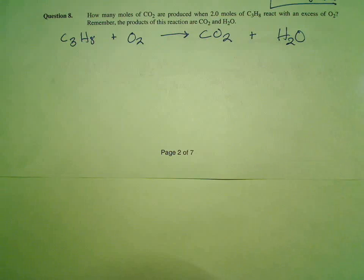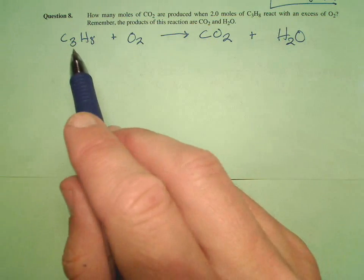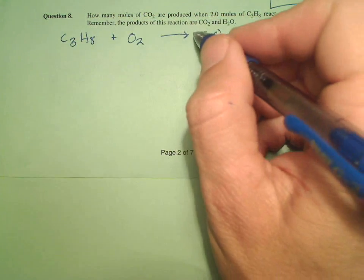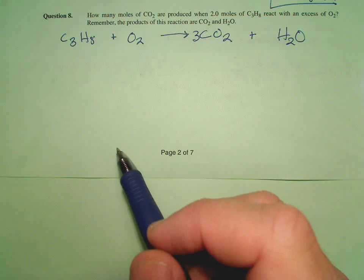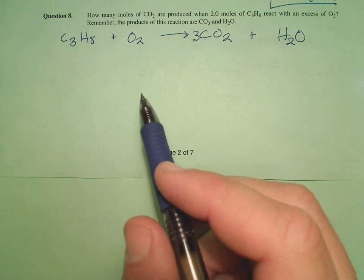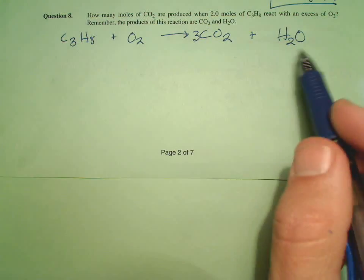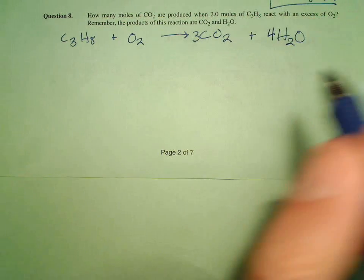If I'm looking at this, remember I need to balance this thing. Let's see, what if I put a 3 here - 3 carbons, 3 carbons. How does that fix me for hydrogens? 8 hydrogens, 2 hydrogens, so I need a 4 there.